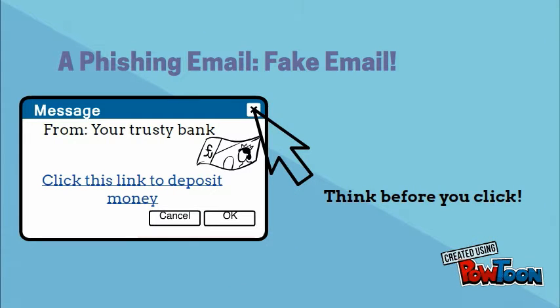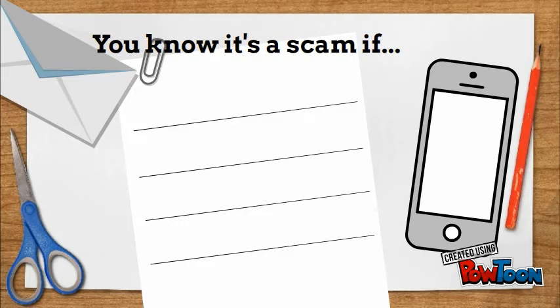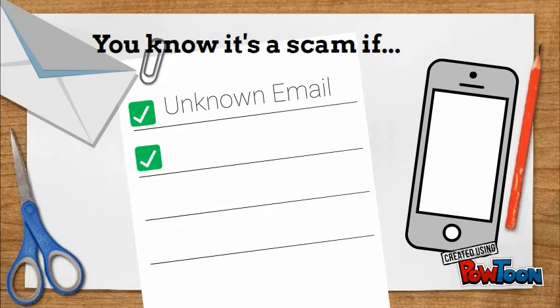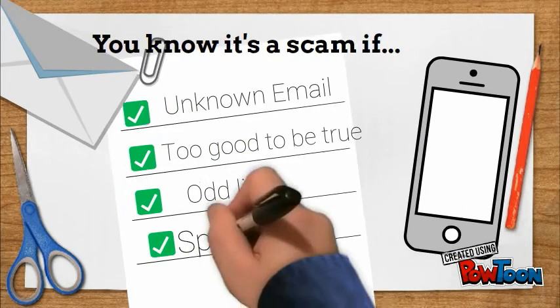A phishing attack is a fake email sent from hackers to look as if a real organization is emailing you. They're just trying to get you to click on a link or attachment that they put in an email. How can you tell if an email is a phish? You can tell if the email address is not known to you, if it's too good to be true, if there's an odd link, or if there are many spelling errors.